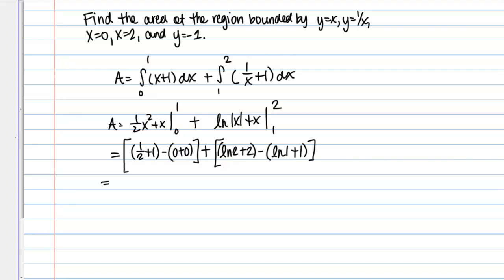Let's work this out. One half plus 1 is three halves and then I've got some zeros and then plus natural log of 2 plus 2 minus natural log of 1, but that's just 0, and then minus 1. It looks like in the end, I should get five halves plus the natural log of 2. That gives me the area of my compound region.